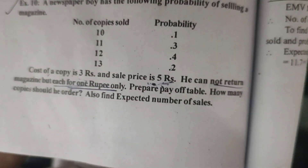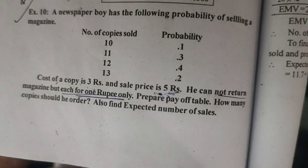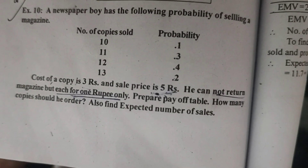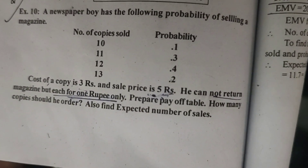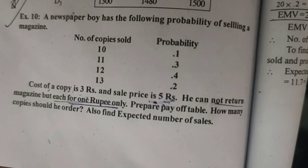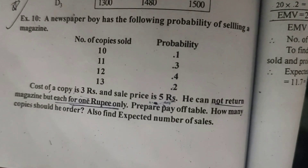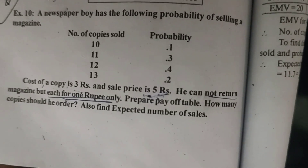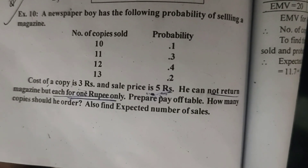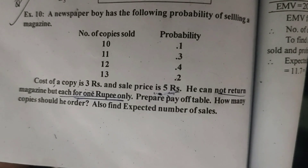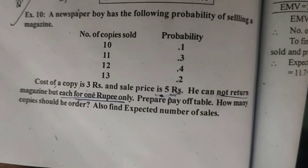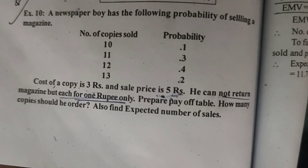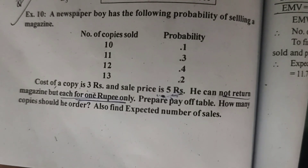A newspaper boy has the following probability of selling a magazine. Number of copies sold: 10, 11, 12, 13, with probabilities 0.1, 0.3, 0.4, and 0.2. The cost of a copy is 3 rupees and the sales price is 5 rupees. He cannot return the magazine but can salvage each for 1 rupee. Prepare the pay-off table, determine how many copies he should order, and find the expected number of sales.